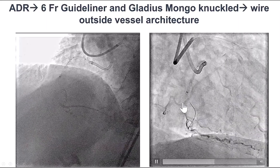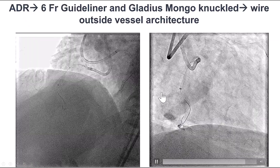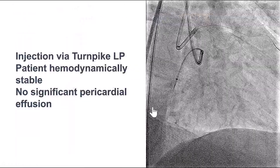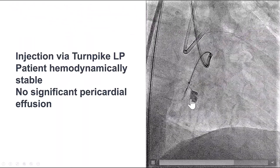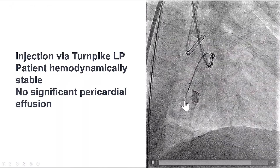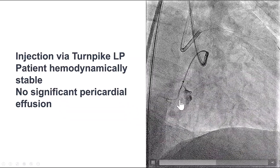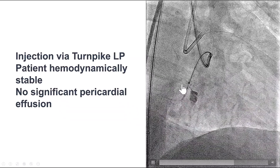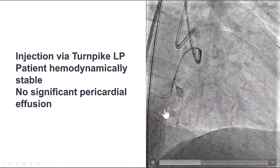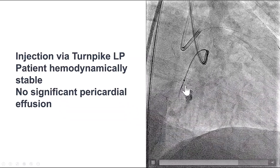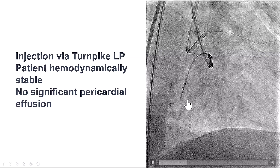This is the RCA view. We can see that the wire is not moving in the expected course of the RCA, which should go straight down. A tip injection from the Turnpike LP shows a perforation with staining. It appeared that the knuckle entered an acute marginal branch and then perforated it.